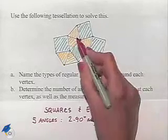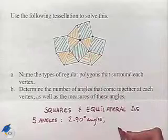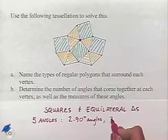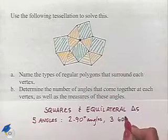And we have three angles that come together that are part of equilateral triangles, so that's going to be three 60-degree angles.